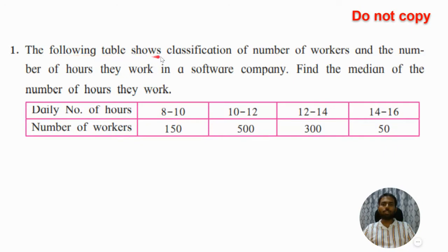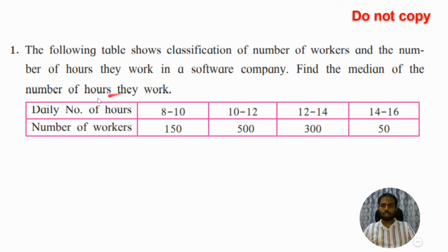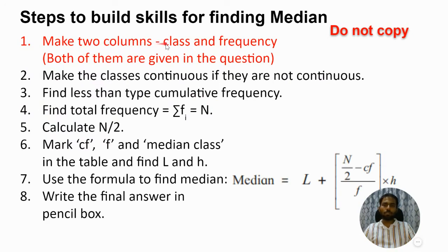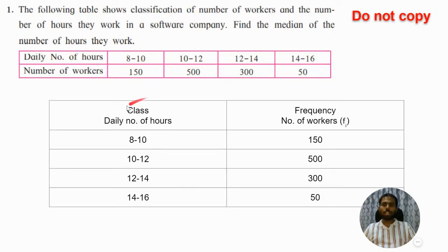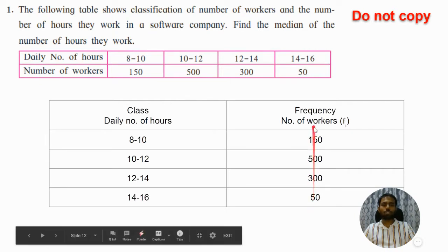Question one: the following table shows classification of number of workers and number of hours they work in a software company. Find the median of the number of hours they work. The daily hours are: 8–10, 10–12, 12–14, 14–16. 150 workers work between 8–10 hours daily, 500 workers work between 10–12 hours daily, and so on. The first step is to make two columns — class and frequency — both given in the question.